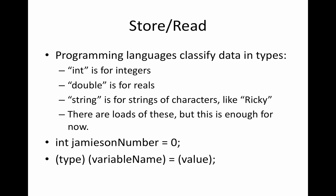So in order to store and read values, you have to tell the computer, or the programming language, what kinds of values you're going to be dealing with. So if we look here at the second bullet point, int Jameson number equals zero,